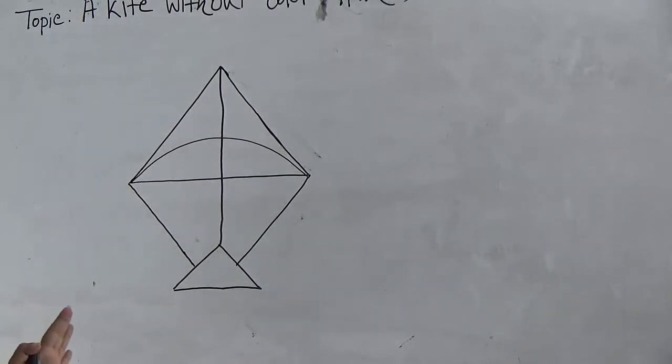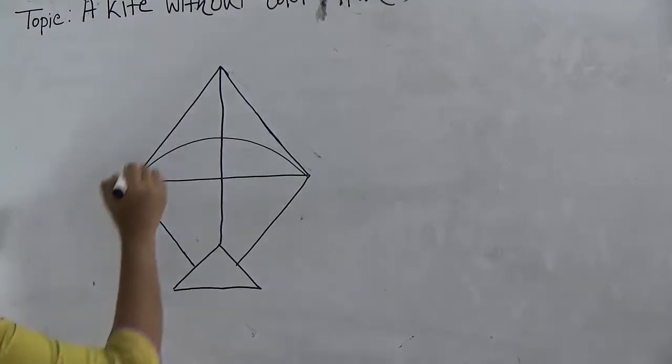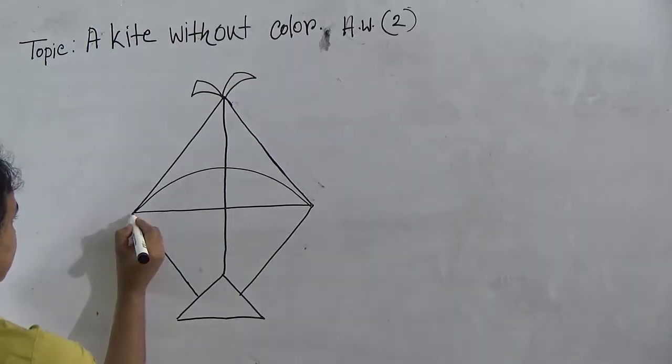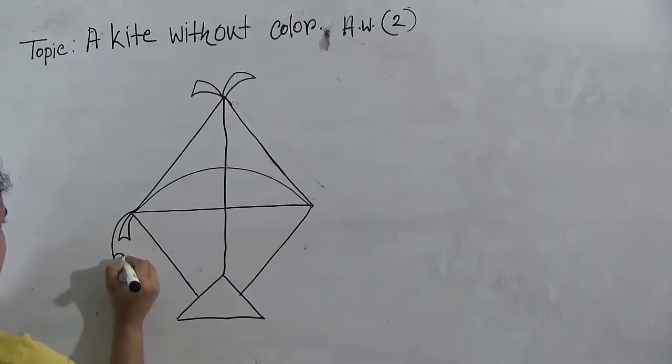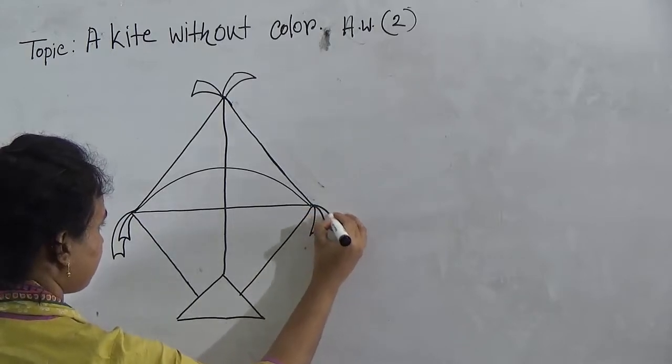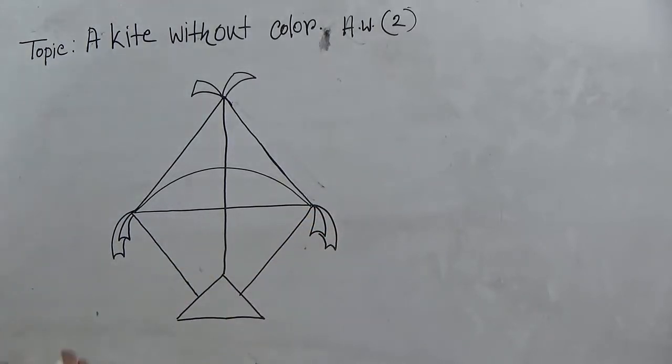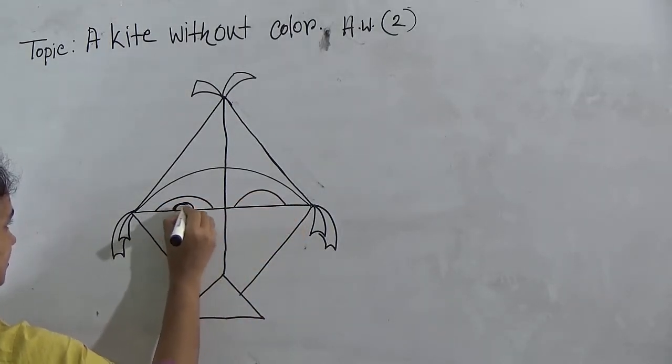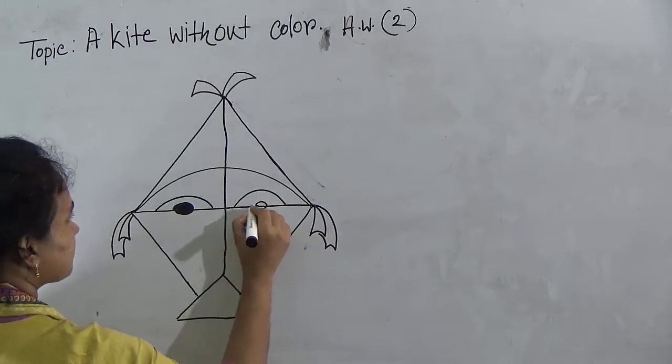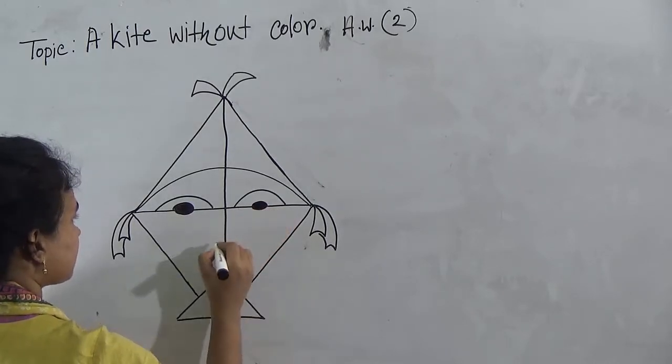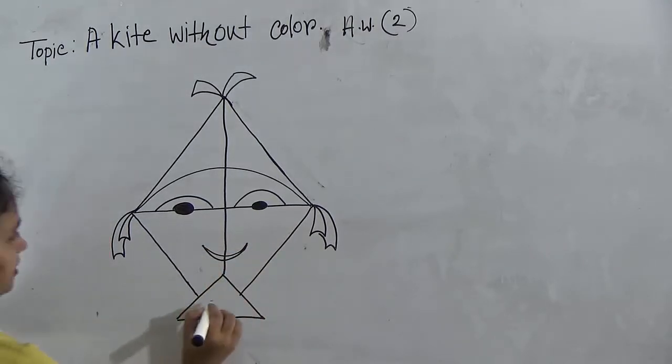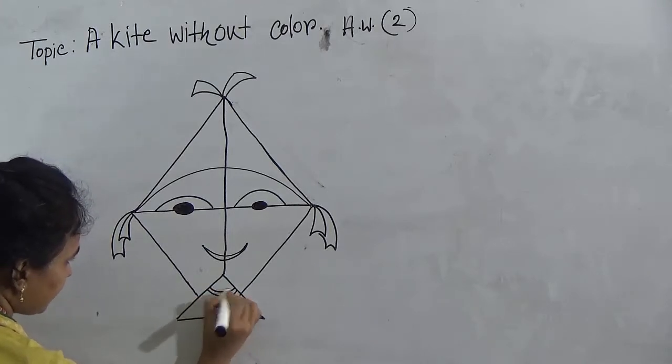Now we will decorate this kite very nicely. First we give this. Then from curved line. This is so easy. Then use eyes. And mouth. And design here.